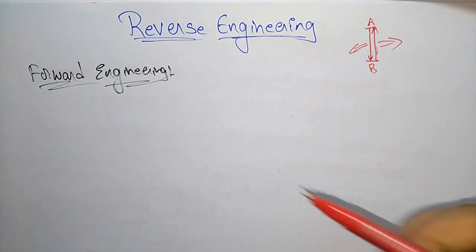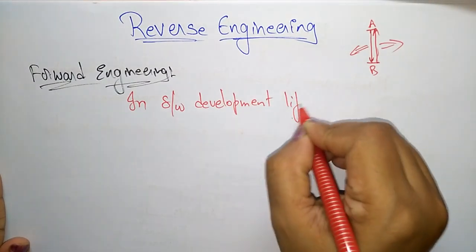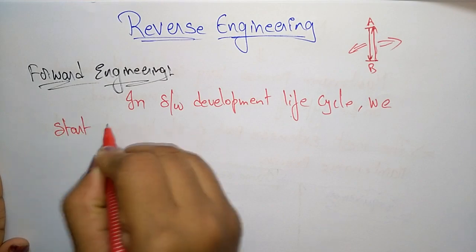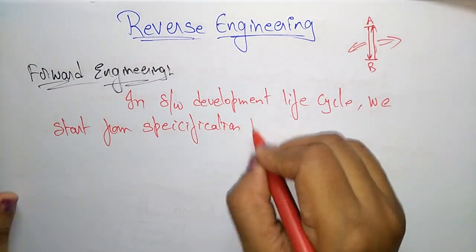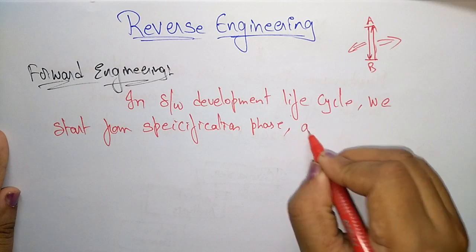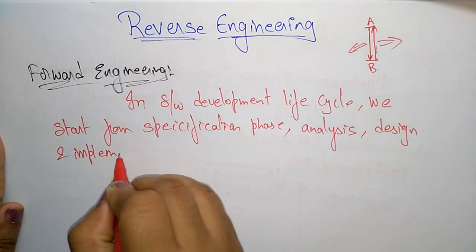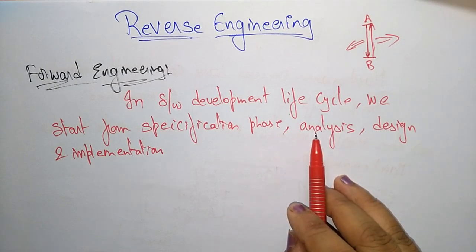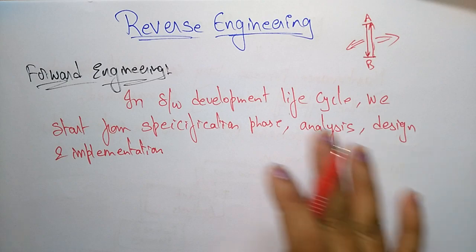Forward engineering: in software development, in the software development life cycle, we start from the specification phase. We start from the specification phase and go through the analysis phase, then design, and then implementation. Whatever project you have taken, whatever model you follow, you start from the specification phase — that is the requirements — then analyze the documents, then design the project, then implementation and testing.